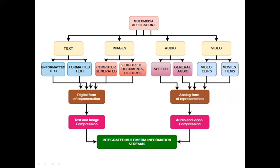Audio and video are both represented in analog form. Analog is a continuous signal — a speech signal. So an audio file is represented in analog, and a video file is also in analog form. Text and image are digital; audio and video are analog. To communicate through networks, we need to compress files — text and image are compressed together, audio and video are compressed together — and all are integrated and sent through a communication channel.